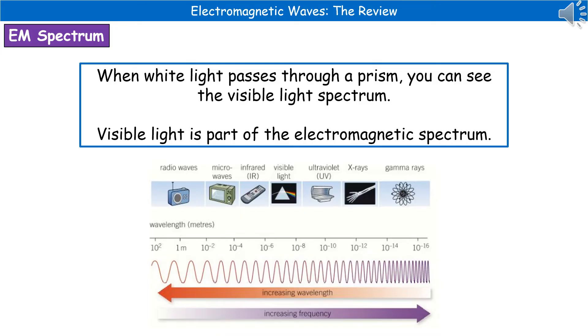So what you need to be able to do with this is not only recall the names of the seven different types of waves that we have on the EM spectrum, but you also need to know about the correct order for them, so that if they were to ask you to place them in order of increasing wavelength or increasing frequency, you could do this.